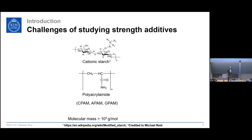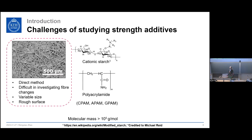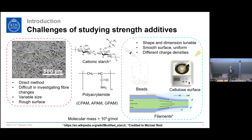Traditionally, when we study paper dry strength additives, we make paper or add strength additives onto fibers, then make paper and measure the strength — a direct method. However, it is very difficult to visualize and quantify how fibers really change with polyelectrolytes, because they have variable size, rough surface, and some pores. So we also involve model cellulose materials, because their shape and dimension are tunable — they can be spherical beads, flat surfaces, or fiber-like filaments. They have smooth surfaces, uniform sizes, and importantly, they can carry different charges, which is very important for studying fundamental adsorption of polyelectrolytes.